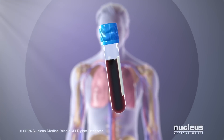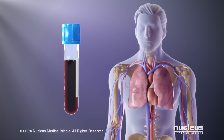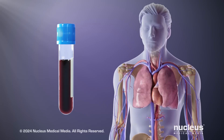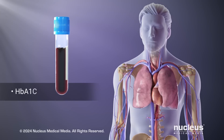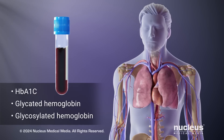An A1c test is a blood test that can be used to estimate the average amount of glucose, or sugar, in your blood over the past three months. Other names for this test are HbA1c, glycated hemoglobin, and glycosylated hemoglobin.